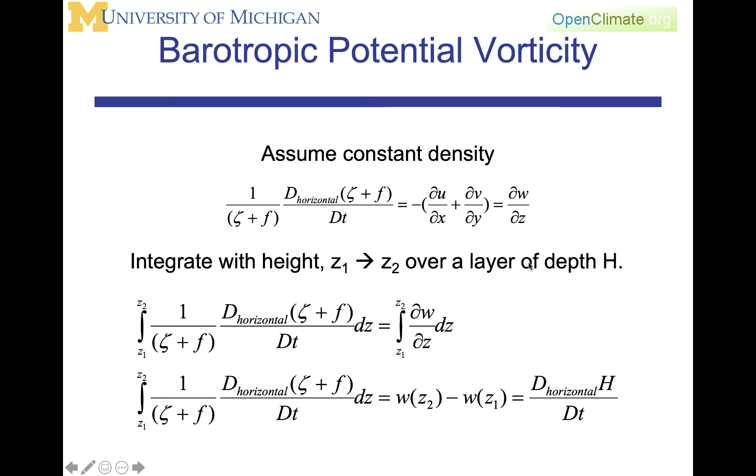We're going to integrate over height as we did in a previous lecture. We're going to recognize that w2 minus w1 when we do this integral, that is the velocities at z1 and z2, is a measure of how fast the depth of the layer is changing. And hence, we have on the right-hand side of the equation the time rate of change of the thickness of a layer.